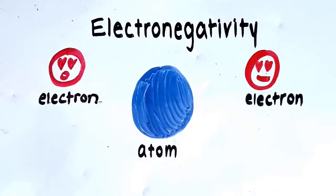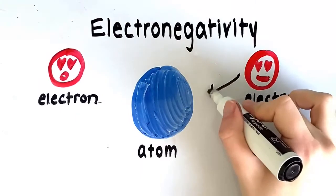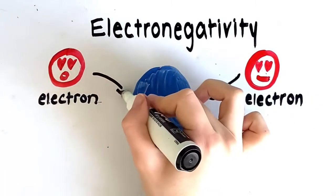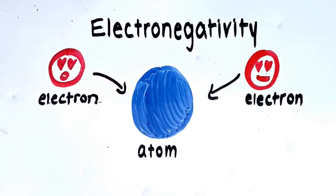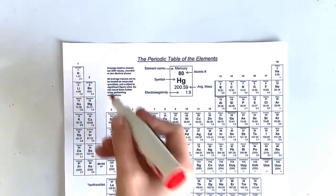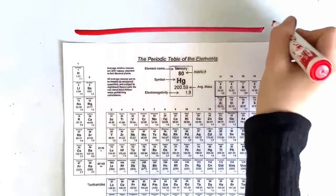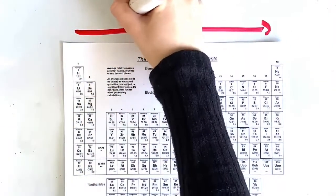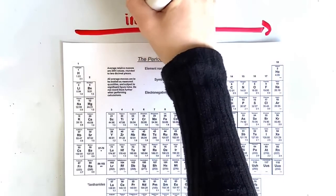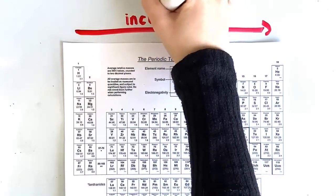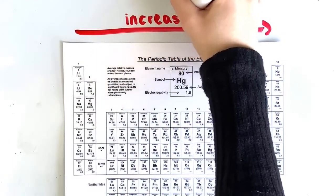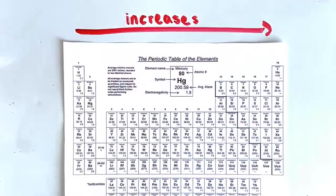Our fourth periodic table trend is electronegativity. This is the electron attracting ability of an atom. The greater the attractive force between a nucleus and shared valence electrons, the greater the electronegativity value. Electronegativity increases going across the periodic table, because as you move across, the number of protons increases, which increases the attraction between the nucleus and the electrons. The greater the attraction, the greater the electronegativity value.